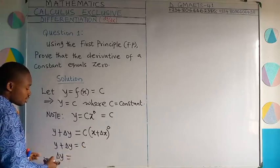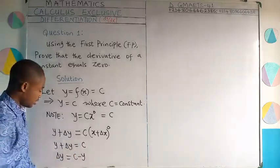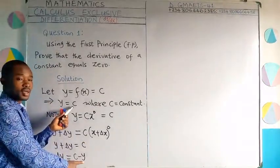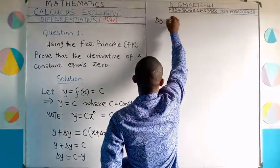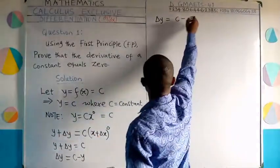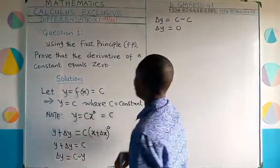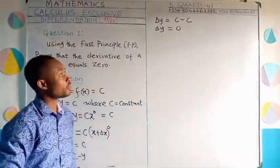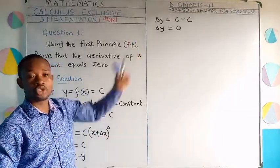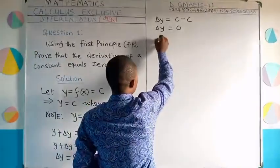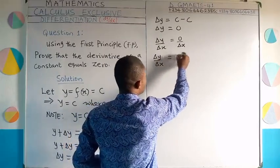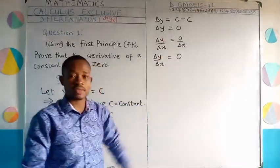Making delta y the subject of the formula gives us delta y equal to c minus y. We know that y equals c, so replacing y with c gives us delta y equal to c minus c, which equals zero. We are trying to obtain the dy/dx of this constant c, so we divide through by delta x. This gives us delta y over delta x equal to zero over delta x, which equals zero.